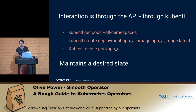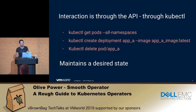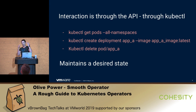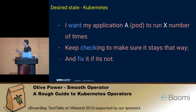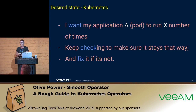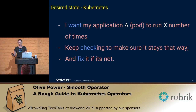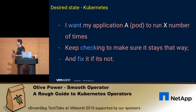The final background point is that Kubernetes maintains a desired state. This is a very important concept — it's a declarative system where you tell it how you want your system to look, and Kubernetes will maintain that, converging on the desired state all the time. So you say to it, I want my application — or in Kubernetes speak, a pod — to run X number of times.